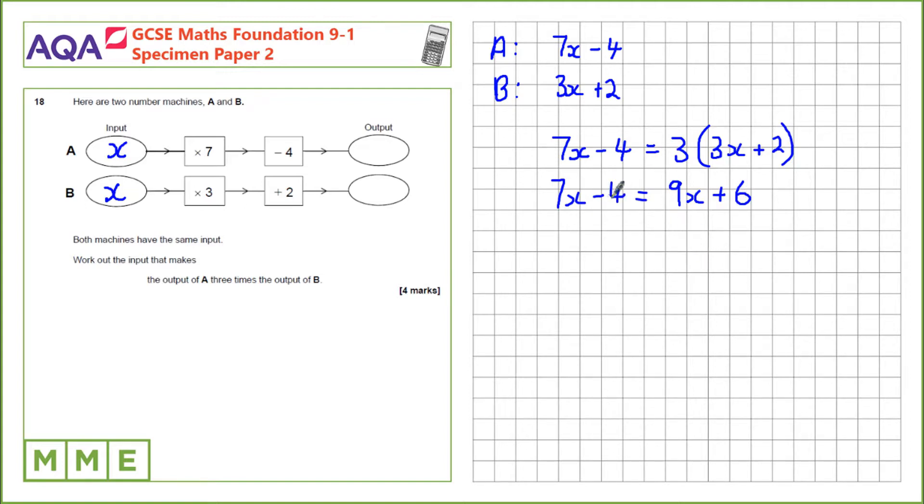Now let's sort out the constants on each side of the equation. Since we have fewer x's on this side than this side, let's move the constants onto this side. So let's take away 6. We get 7x minus 10 on this side.